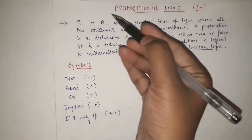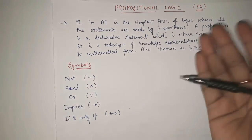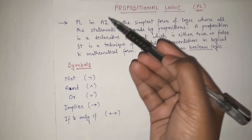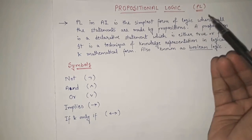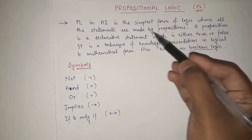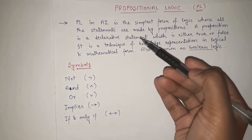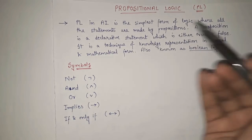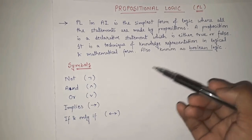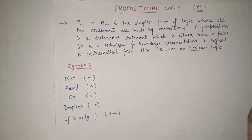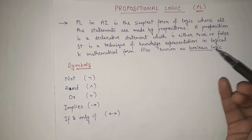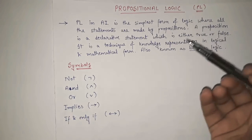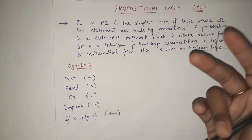In this current video we are going to learn propositional logic in detail, and in the next video we will learn FOL in detail. So, what is propositional logic? Propositional logic in AI is the simplest form of logic where all the statements are made by propositions. A proposition is a declarative statement which is either true or false. It is a technique of knowledge representation in logical and mathematical form. Propositional logic is also known as boolean logic, because boolean logic deals with two values — true and false, or zero and one — and propositional logic also deals with true or false.